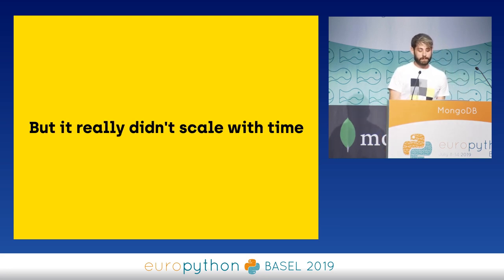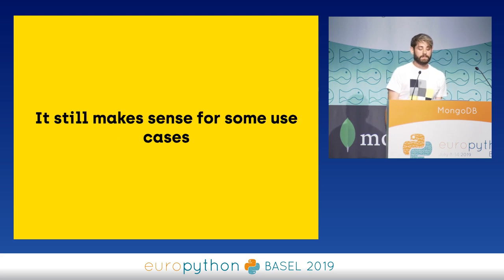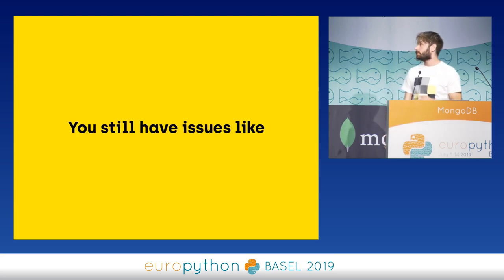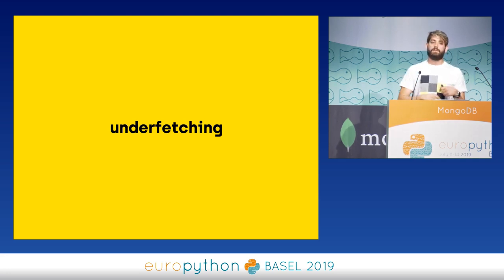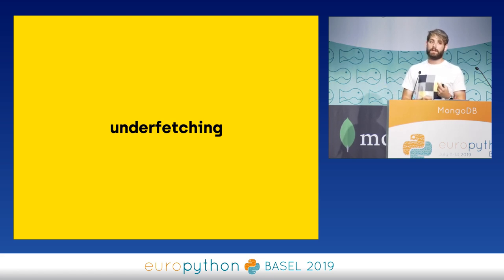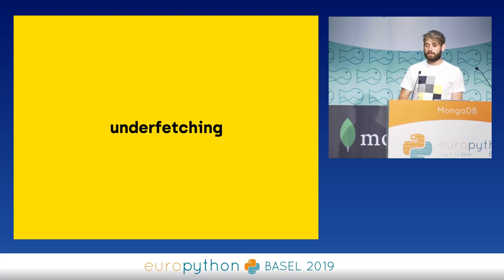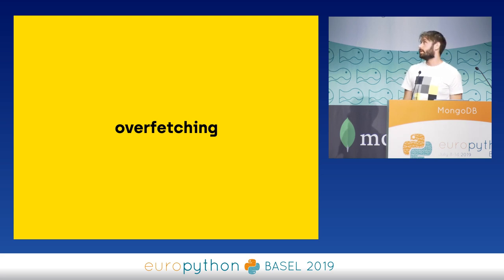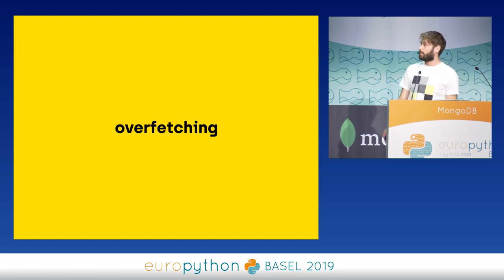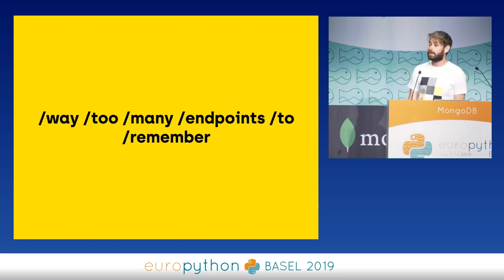But REST really didn't scale with time. While it still makes sense for some use cases, you still have issues like under-fetching — you do a request, and then you have to do more requests to get more data. For example, you have a blog post and you want information about the author, but the author is just a link, so you need to do another GET to fetch that. The solution is to create a new endpoint, but then you have over-fetching, where you're sending way too much data to a client that doesn't need it.